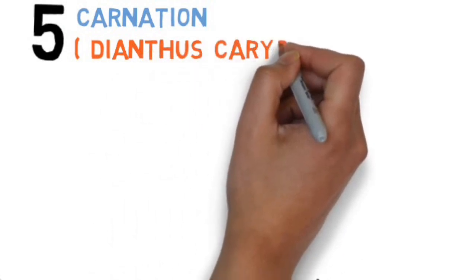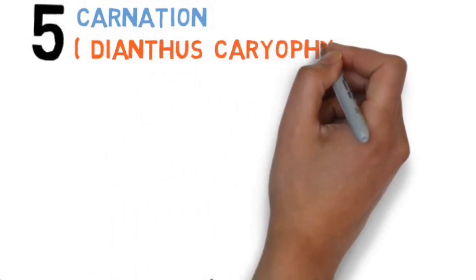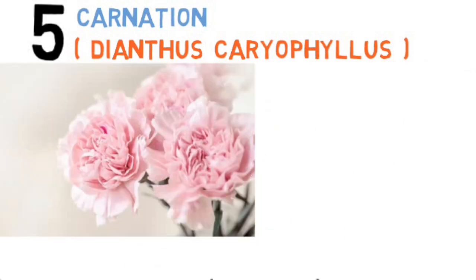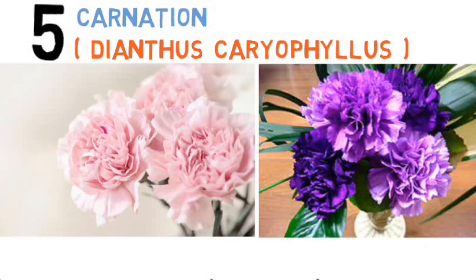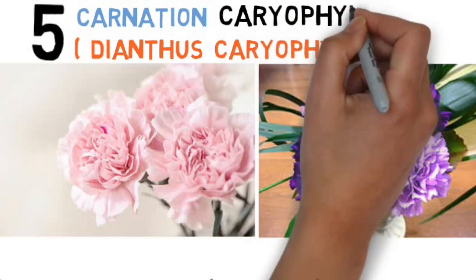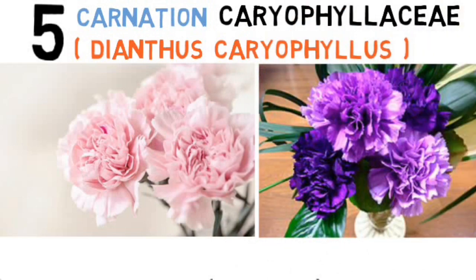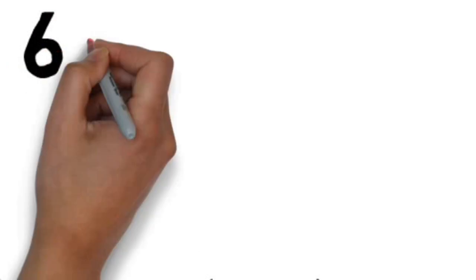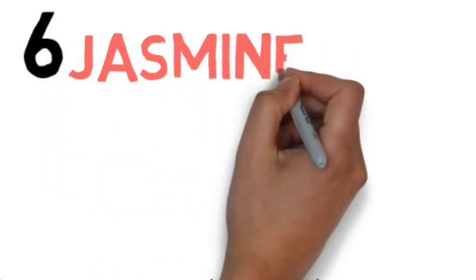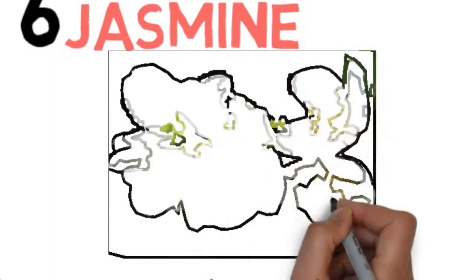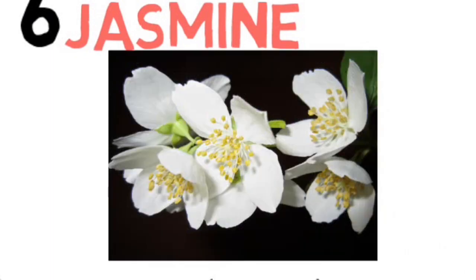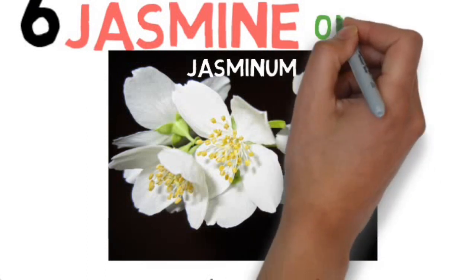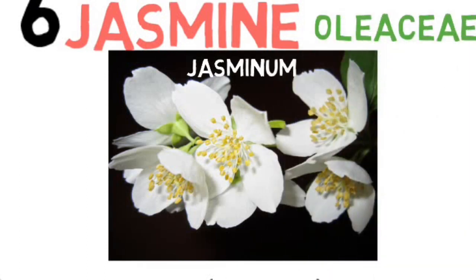Next is carnation. Its scientific name is Dianthus and it belongs to the family Caryophyllaceae. Next is jasmine. Its scientific name is Jasminum and it belongs to the family Oleaceae.